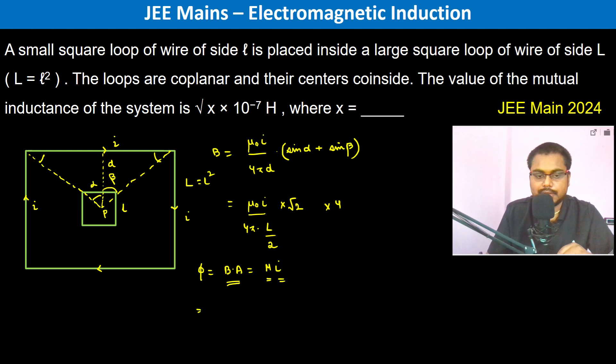So μ₀ is 4π × 10⁻⁷ divided by 4π into I, divided by L/2 which is L squared, into 2 and √2 and into 4, and into area. The area of the small loop is going to be small L squared.